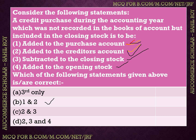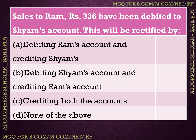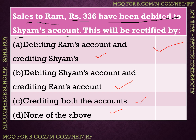Next question: sales to Ram of rupees 336 have been debited to Sham's account. How will this be rectified? Options: (A) debiting Ram's account and crediting Sham's, (B) debiting Sham's account and crediting Ram's, (C) crediting both accounts, (D) none of the above. The correct answer is option A — debit Ram's account and credit Sham's account. This is the rectifying entry.